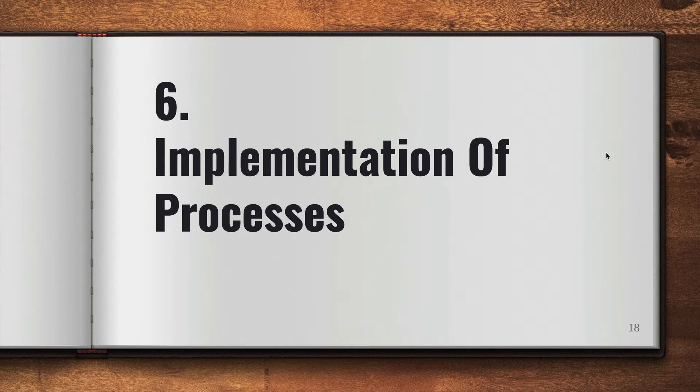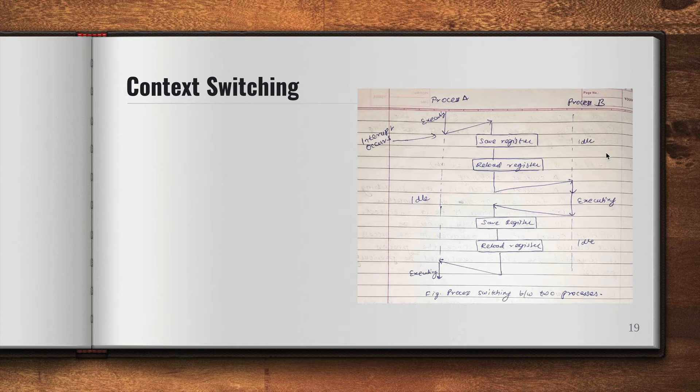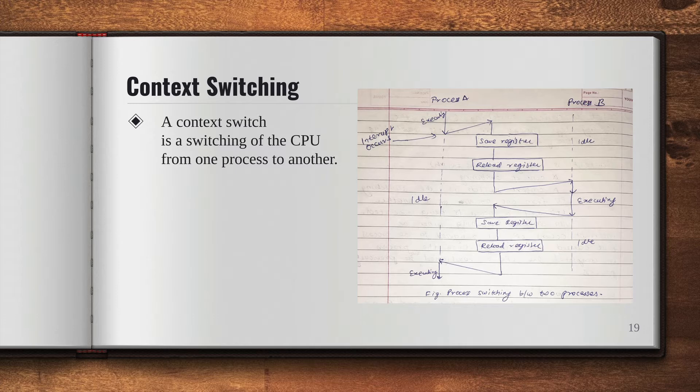Hello everyone, in this video we're going to talk about the implementation of processes. Specifically, we're going to talk about context switching. So what is context switching? Context switching is basically the switching of the CPU from one process to another process.